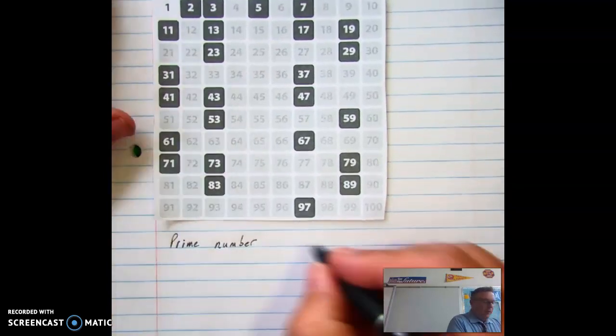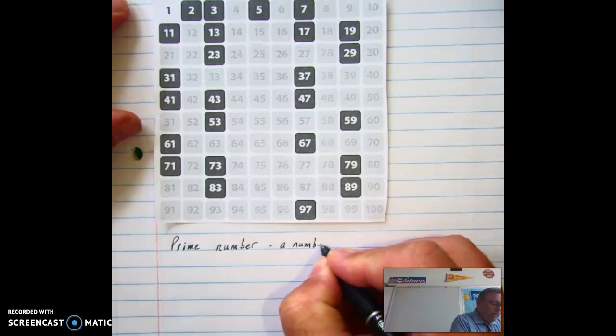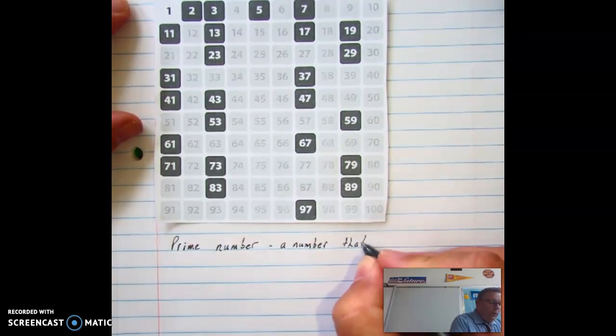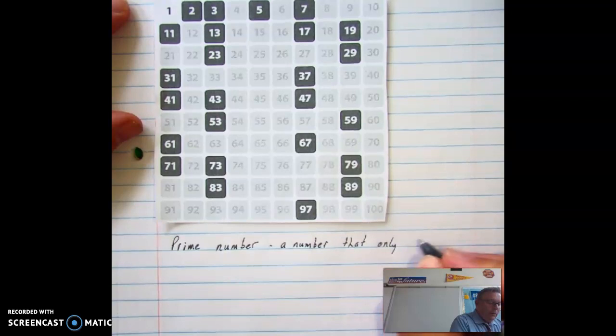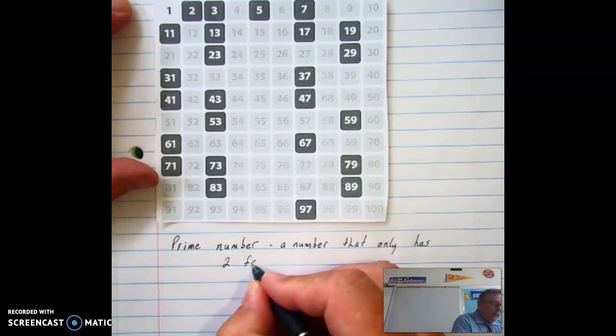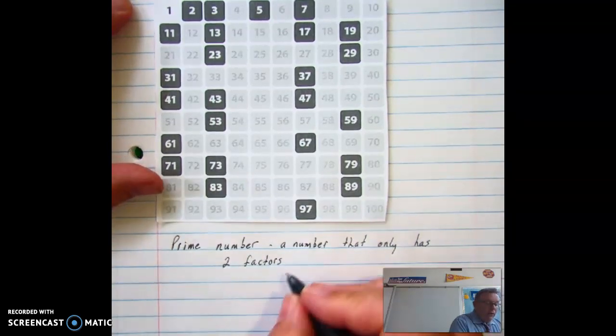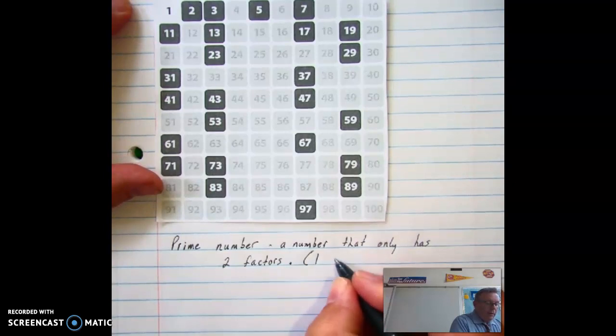A prime number is a number that only has two factors. And the two factors always are one and itself.